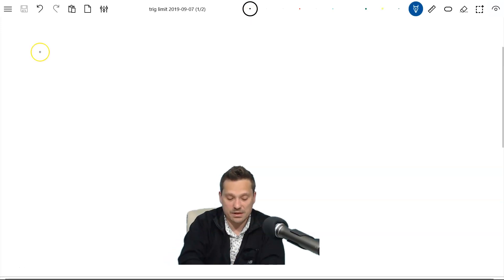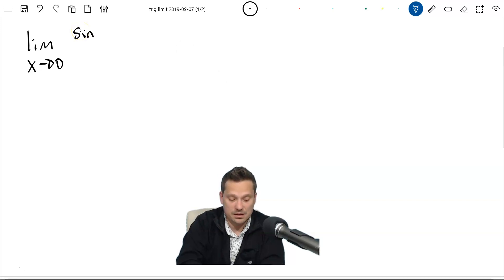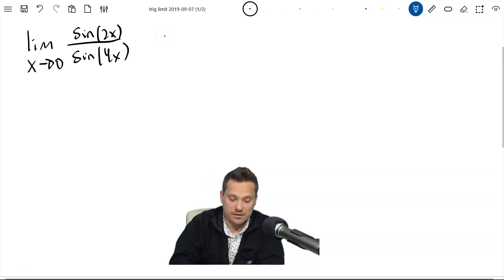So here is the limit. Imagine that we want to find the limit as x approaches 0 of sine of 2x over the sine of 4x. So let's work this out.